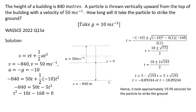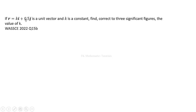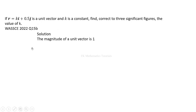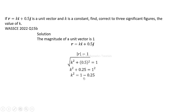Now for part b of this question: if vector i equals ki plus 0.5j is a unit vector and k is a constant, find correct to three significant figures the value of k. A unit vector has a magnitude of 1, so the magnitude given by the square root of x squared plus y squared must equal 1. Solving: 1 minus 0.25 equals 0.75, so k is approximately 0.866, to three significant figures.